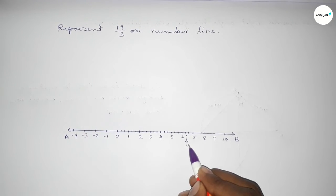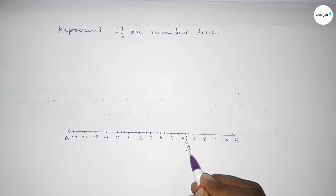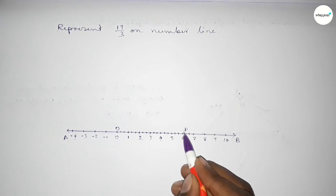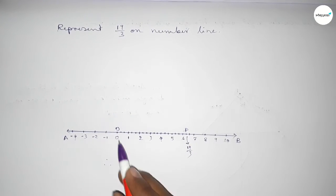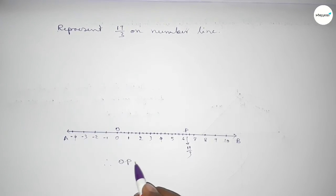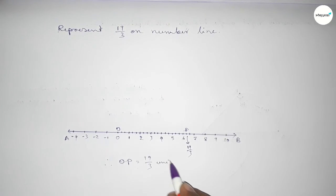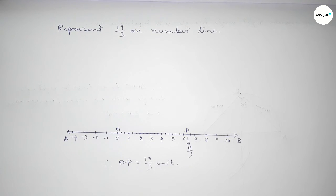So this is 19 over 3 on the number line. Therefore OP equals 19 over 3 units. That's all, thanks for watching. Please share it with your friends.